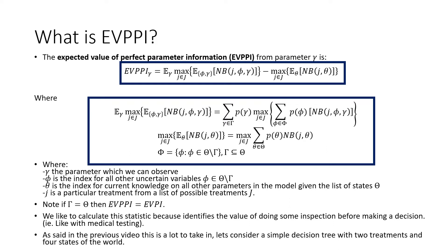And j is a particular treatment from a list of possible treatments j. Note that if gamma is the exact same as theta, that means our observed states of the world is the same as the universe of all sets. Then our expected value of perfect parameter information is the same thing as our expected value with perfect information.